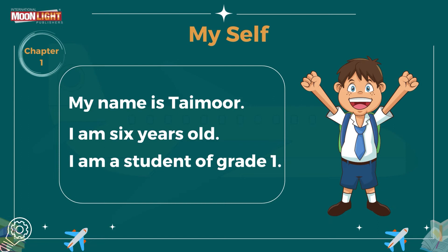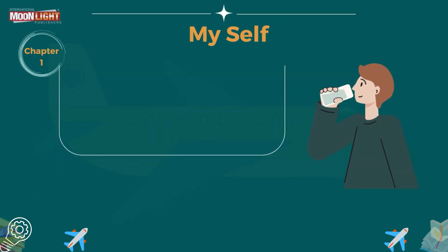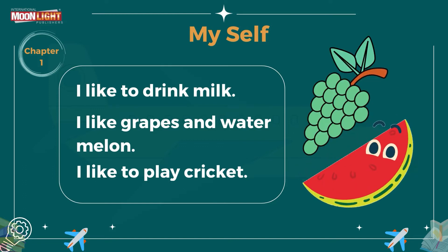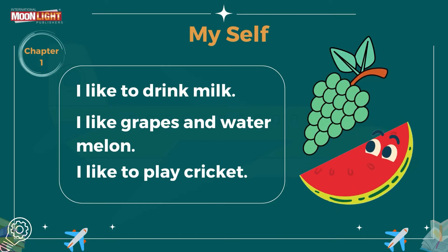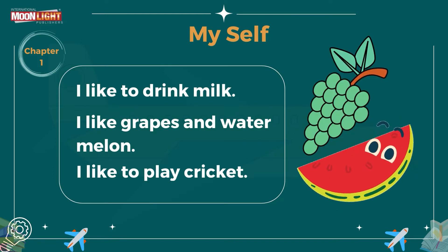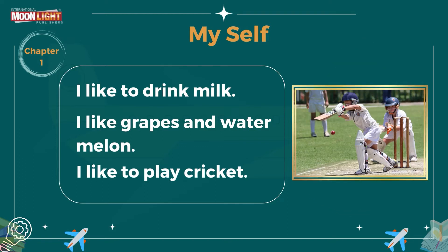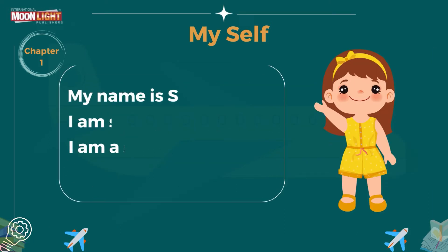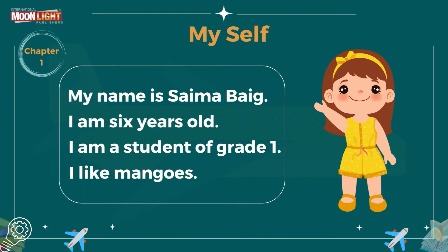Now Temur will introduce himself. My name is Temur, I am six years old, I am a student of Grade 1. I like to drink milk, I like grapes and watermelon, I like to play cricket, and I want to become a cricketer.